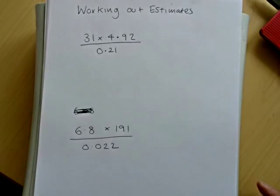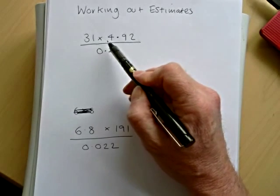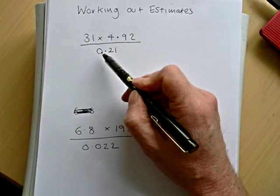I'm going to show you how to work out estimates now. So we've been asked in the first example to do 31 times 4.92 over 0.21.